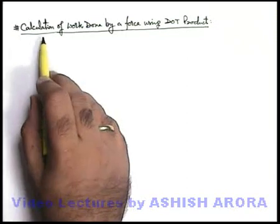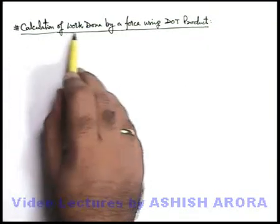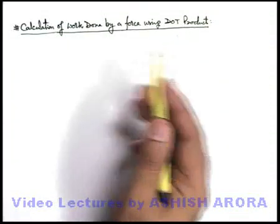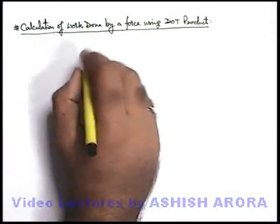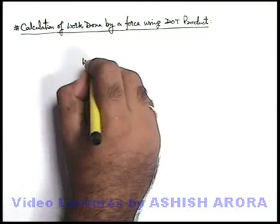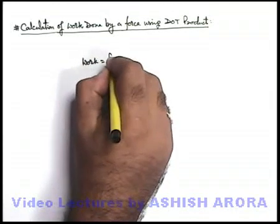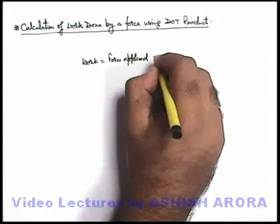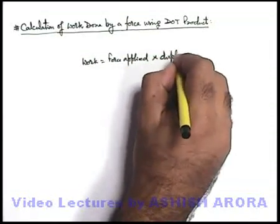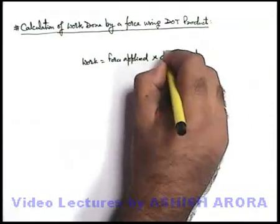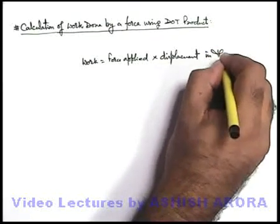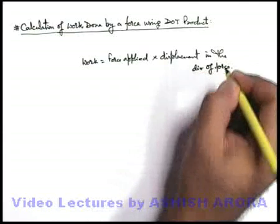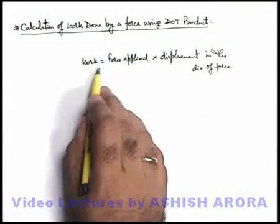Now we'll study a concept of physics — calculation of work done by a force using dot product. Work can be given as the force applied multiplied by the displacement in the direction of force. This is the way we calculate the work done by a force.